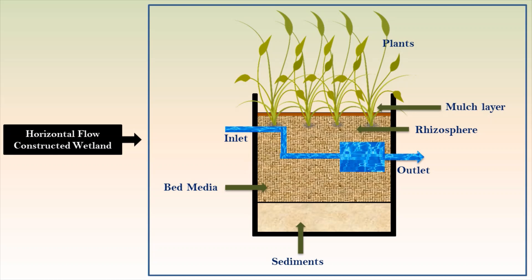In the horizontal flow constructed wetland, the wastewater flows from the inlet of the bed to the outlet horizontally. The area requirement of horizontal flow constructed wetlands is much higher — five to ten square meters per population equivalent.